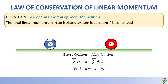This means the momentum of ball 1 initial plus the momentum of ball 2 initial equals the momentum of ball 1 final plus the momentum of ball 2 final. Written out: M1·V1_initial plus M2·V2_initial equals M1·V1_final plus M2·V2_final.